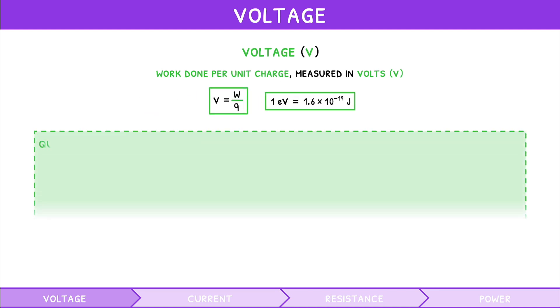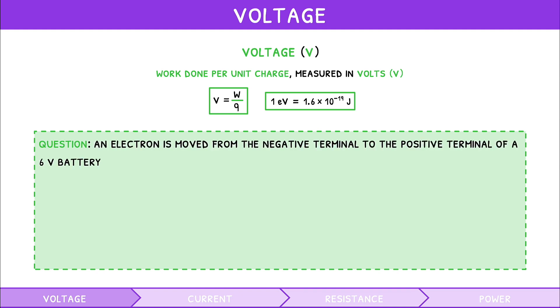Let's review this with a practice question. An electron is moved from a negative terminal to the positive terminal of a 6 volt battery. What is the work exerted on it in electron volts?